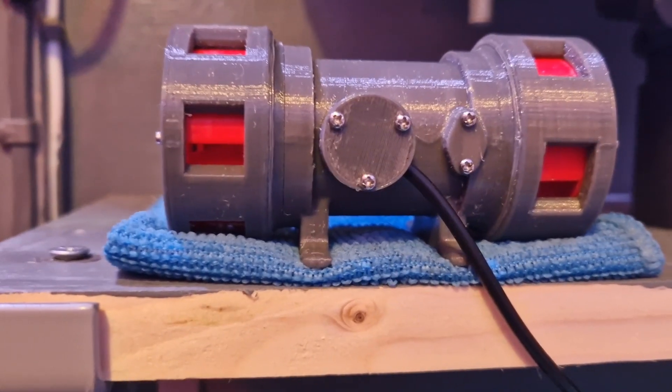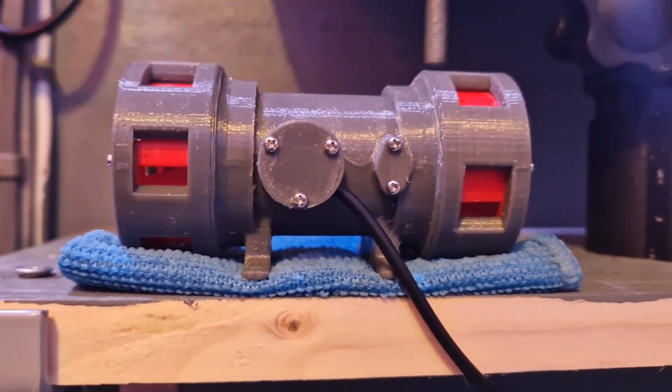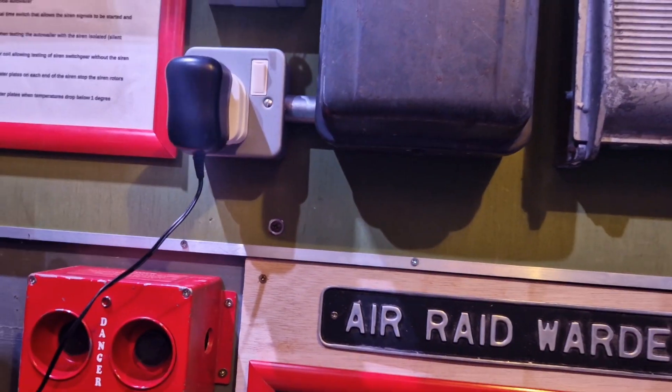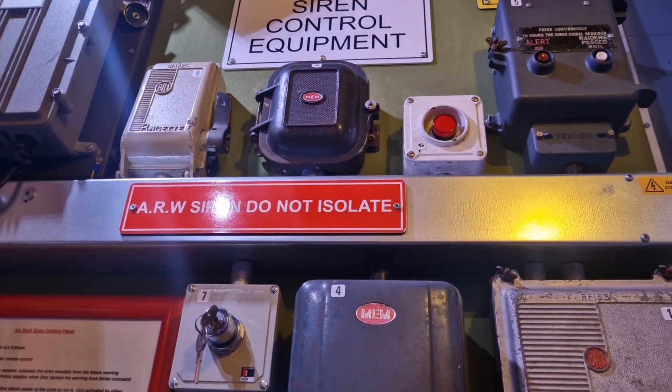This one's 6V DC so I suppose you could run it off a battery and always have an air raid siren in your pocket ready to go. Today we've hooked it up through an adapter and we're going to run it off that panel there.